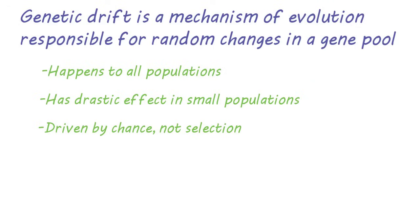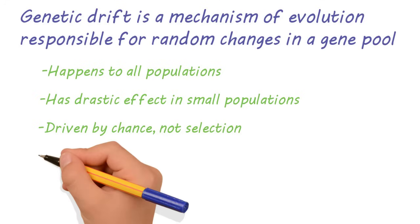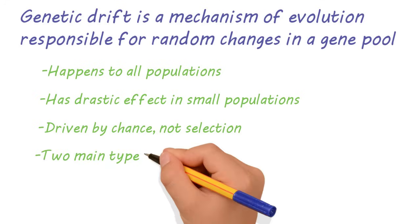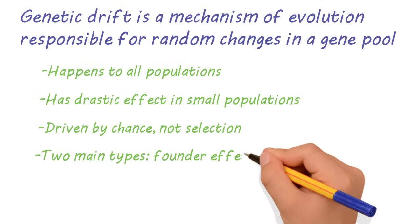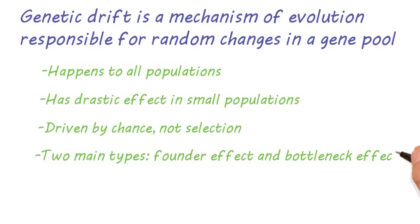Natural selection doesn't come into play when we're looking at genetic drift. There are two main types of genetic drift: the founder effect and the bottleneck effect. We'll look at some examples of both of these.